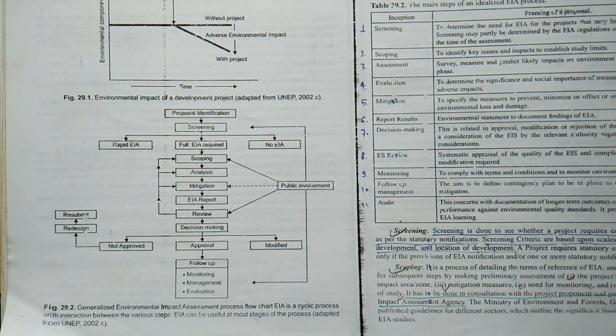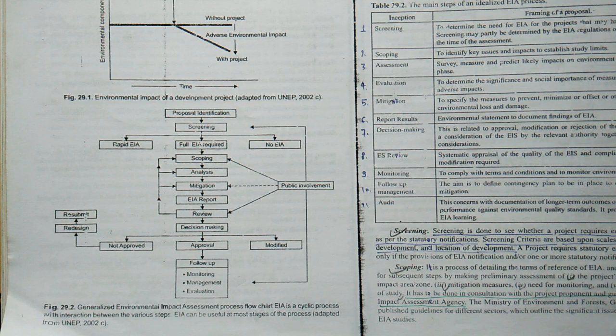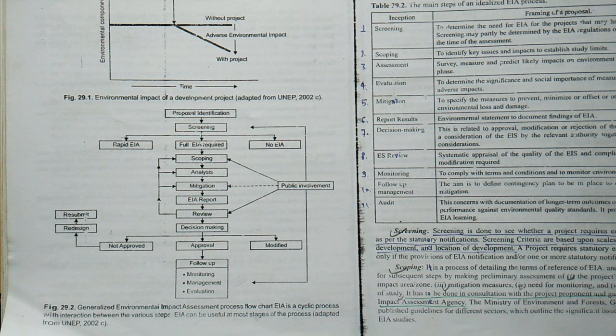EIA is a process that examines the environmental consequences of development actions in advance, with an emphasis on environmental protection. So we can say that EIA is a cyclic activity. What are the steps to assess environmental status?